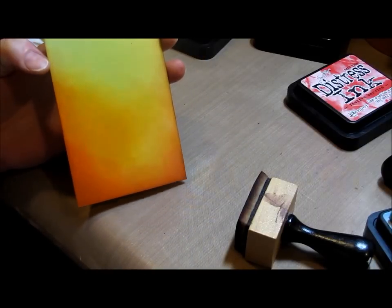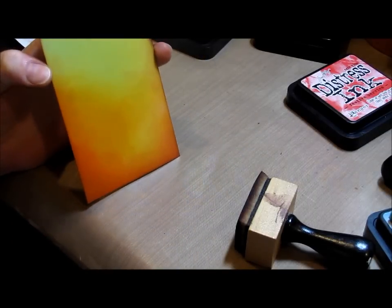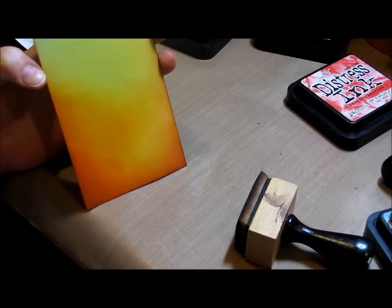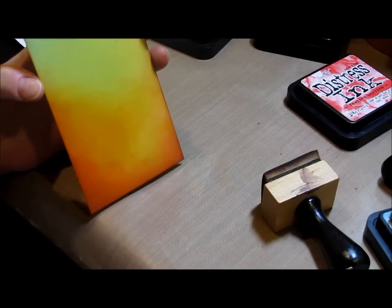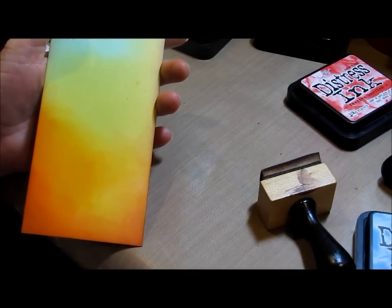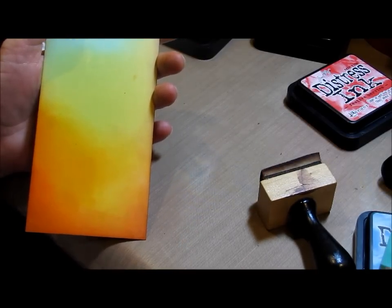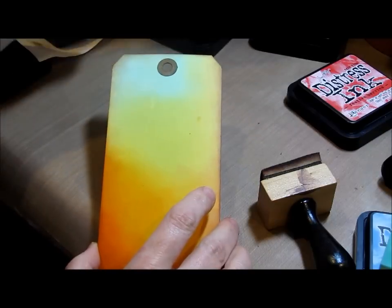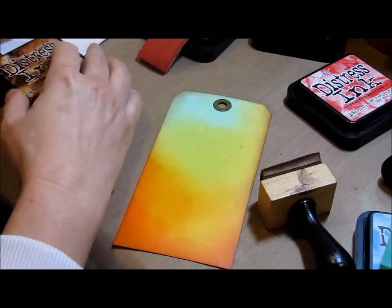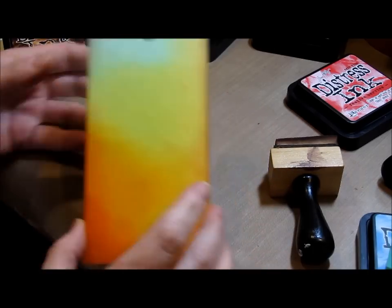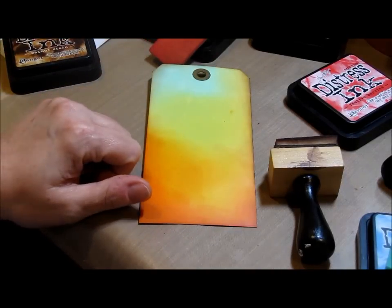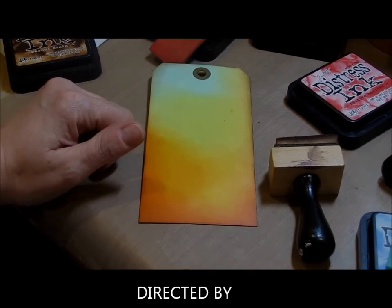Blending according to Lisa. What do you think? Look okay? You know where to find me if you have any questions, but I think it looks alright. So those were my colors: tumbled glass, scattered straw, festive berries, wild honey, shabby shutters, and walnut stain. And there's my lovely little tag. See ya!